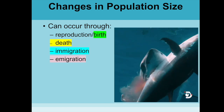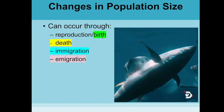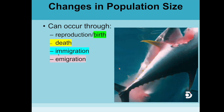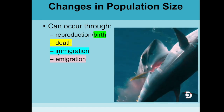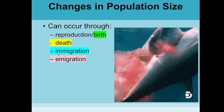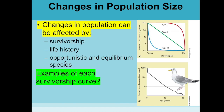Populations can change based on how many organisms are born versus how many die, and also how many immigrate — moving into the population — or emigrate — moving out of the population.